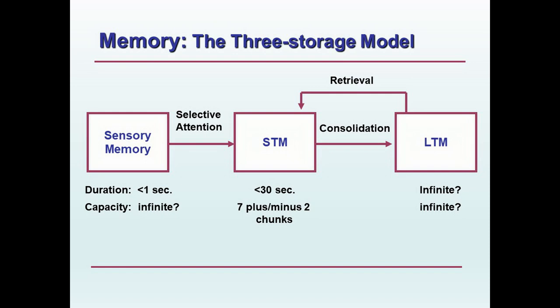Three storage model of memory. Obviously there are three types of memory processes: sensory memory, short-term memory or STM, and long-term memory or LTM. According to this model, there are environmental events and stimuli that occur. That information enters sensory memory, and we may selectively attend to that information. If so, it enters short-term memory.